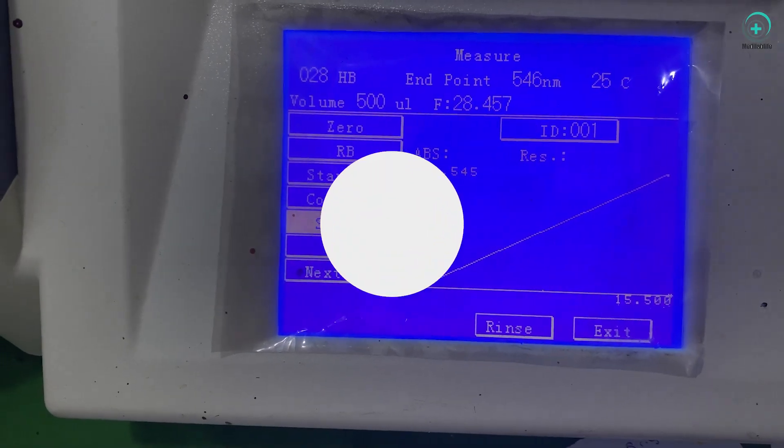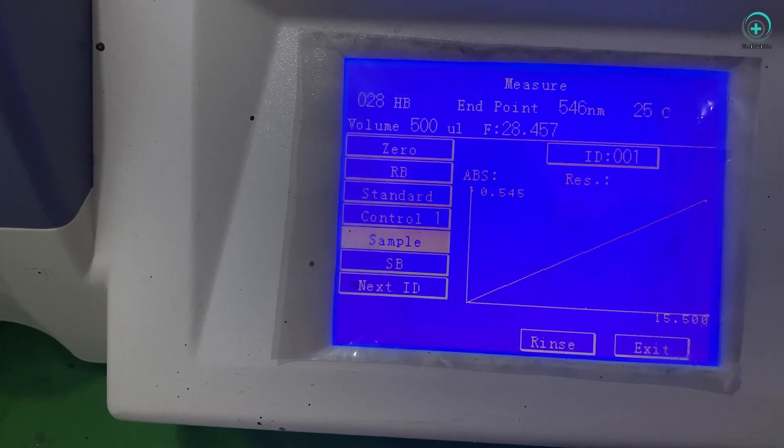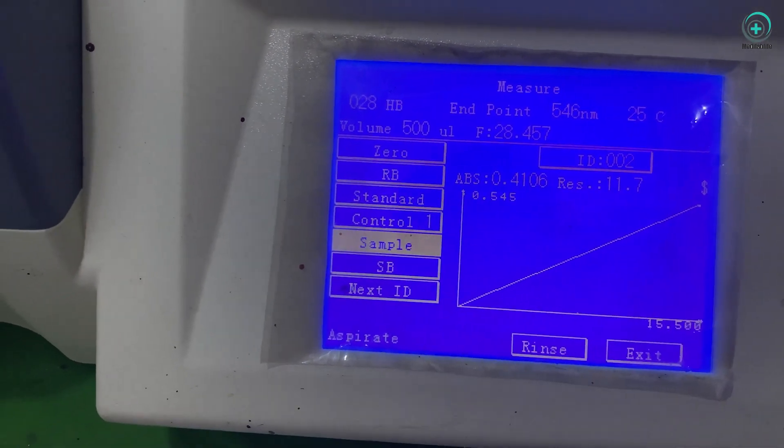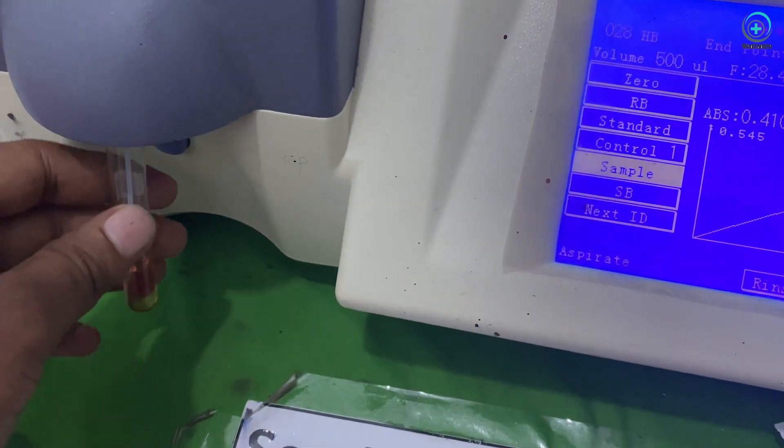Step 7: Observing the result. Interpret the results displayed on the biochemistry analyzer, noting reference ranges and clinical significance.